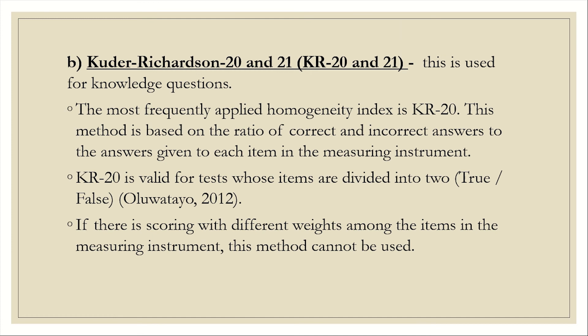The second alpha coefficient, which is not commonly used, is Kuder-Richardson 20 and 21 (KR-20 and KR-21). This test is applicable and most appropriate for knowledge questions. The most frequently applied homogeneity index is KR-20. The method is based on the ratio of correct and incorrect answers given to each item in the measuring instrument. KR-20 is valid for tests whose items are divided into two, like we had in split-half. If there is scoring with different weights among the items in the measuring instrument, this method cannot be used. Remember, across reliability we need items that are measuring the same construct and have the same weight.